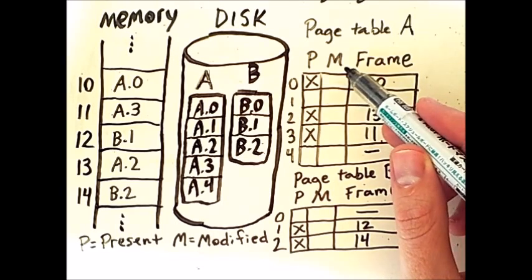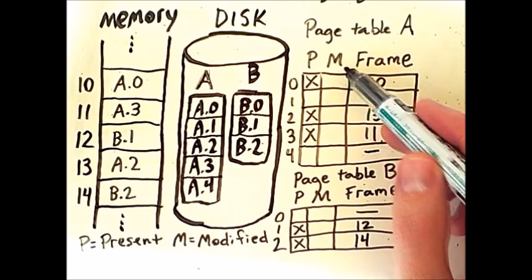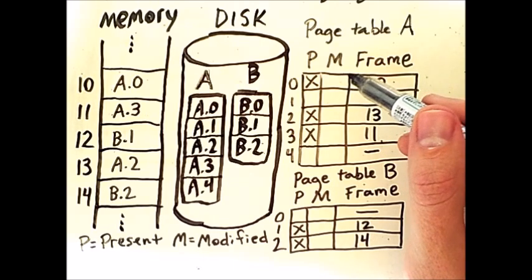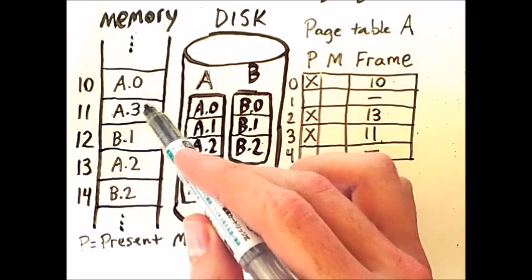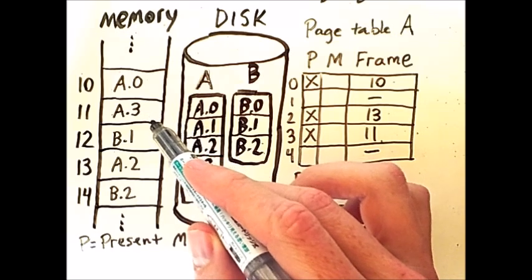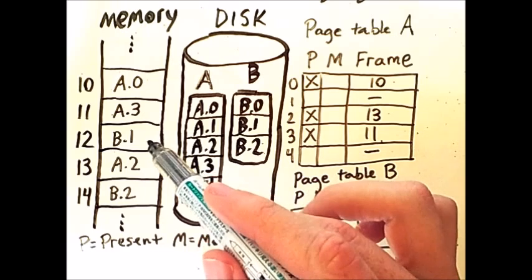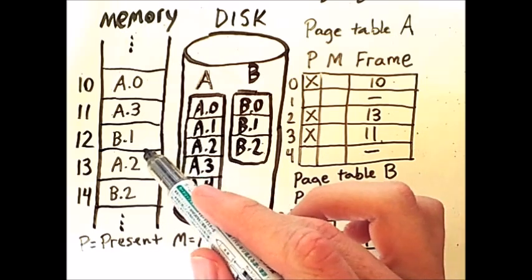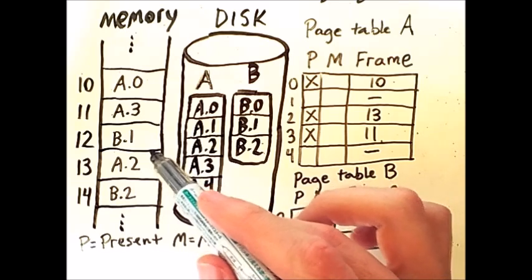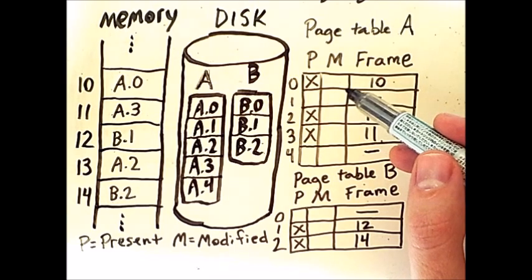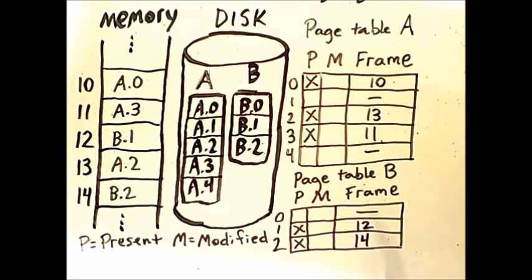For each process there is also a bit M for modified. This indicates whether or not the page contents have changed since being copied into memory. Now recall that there are different types of portions of a process. There is the executable code and the data and the stack. The code itself will not change during execution. So that portion of the process will never be modified. However, some portions of the process, like the data, are very likely to change.